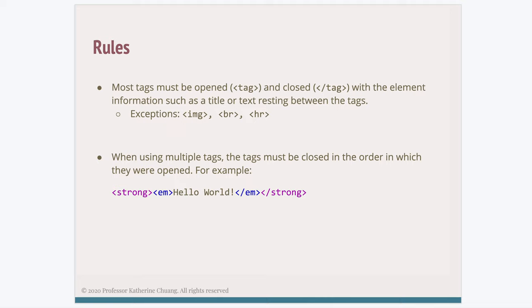There are some basic rules regarding the use of tags. The first rule is that you must have an open and a close tag when using them. The exceptions are just a few: image, line break (br), and horizontal rule (hr). Pretty much all other tags will be in the format of open and close tags. The second rule is that when you have multiple tags — for instance if you want both bolded and italicized fonts — you open each of them but must close them in the same order, like the order of parentheses in mathematical expressions.